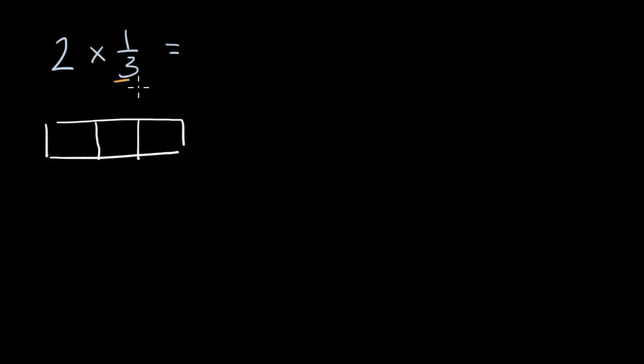One-third of that whole would be one of the three equal sections. So if I say two times that, that would be two of these.